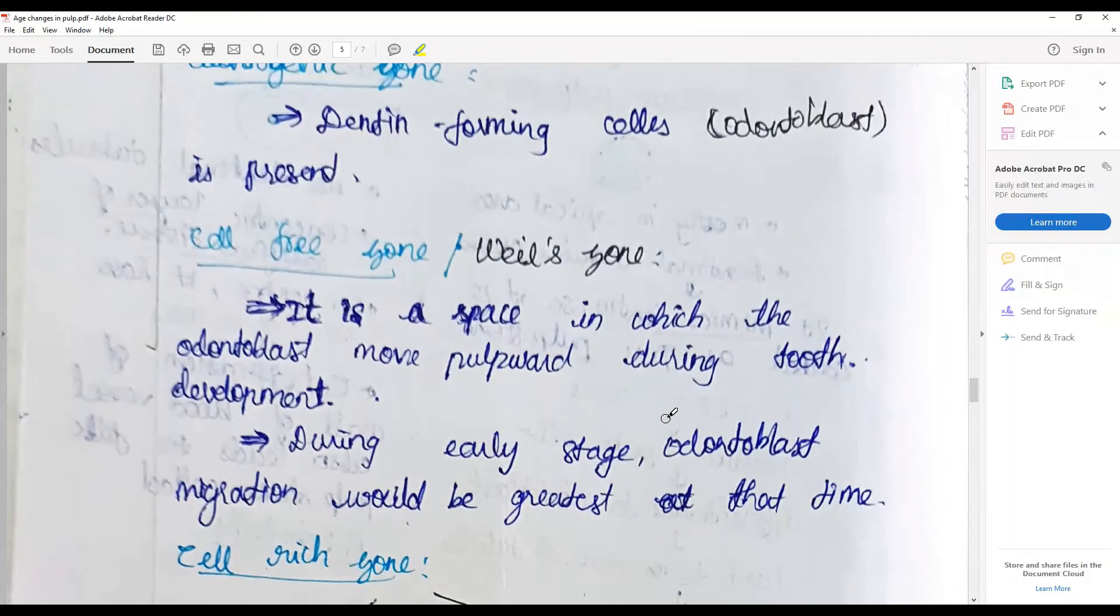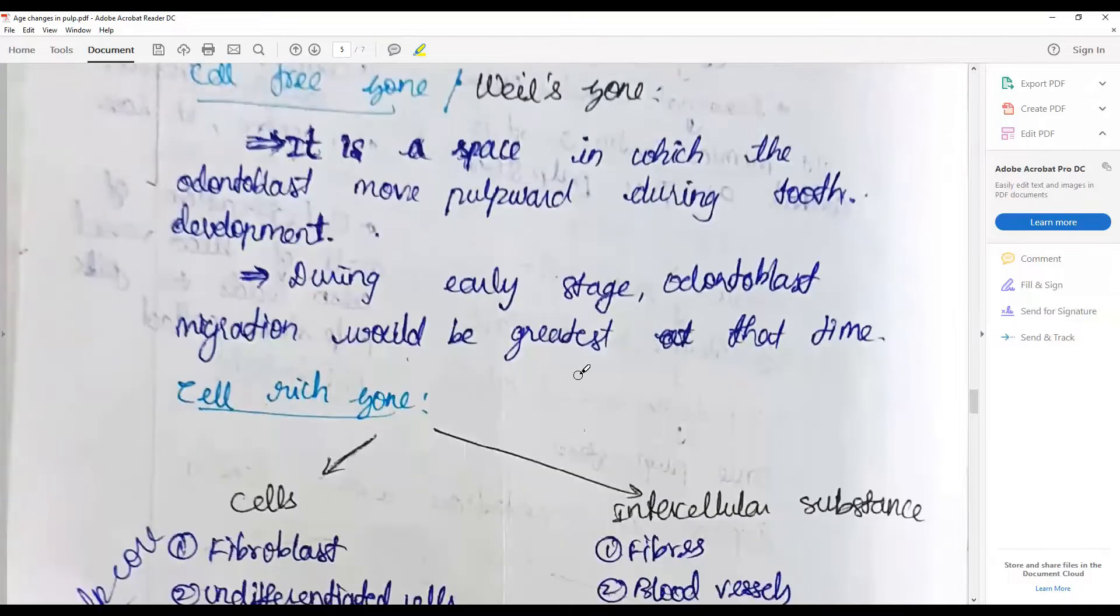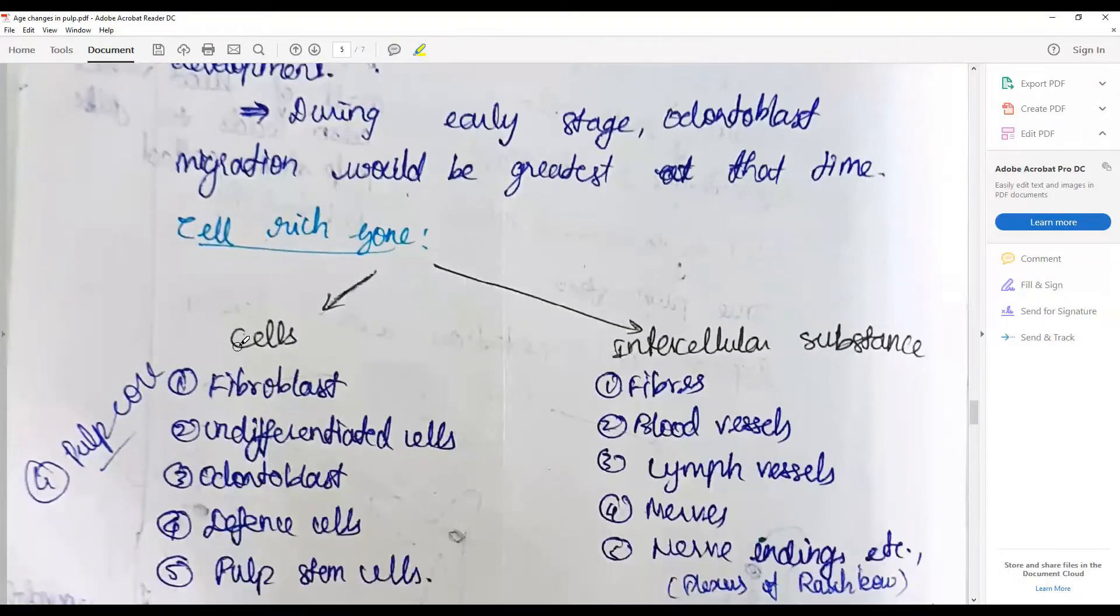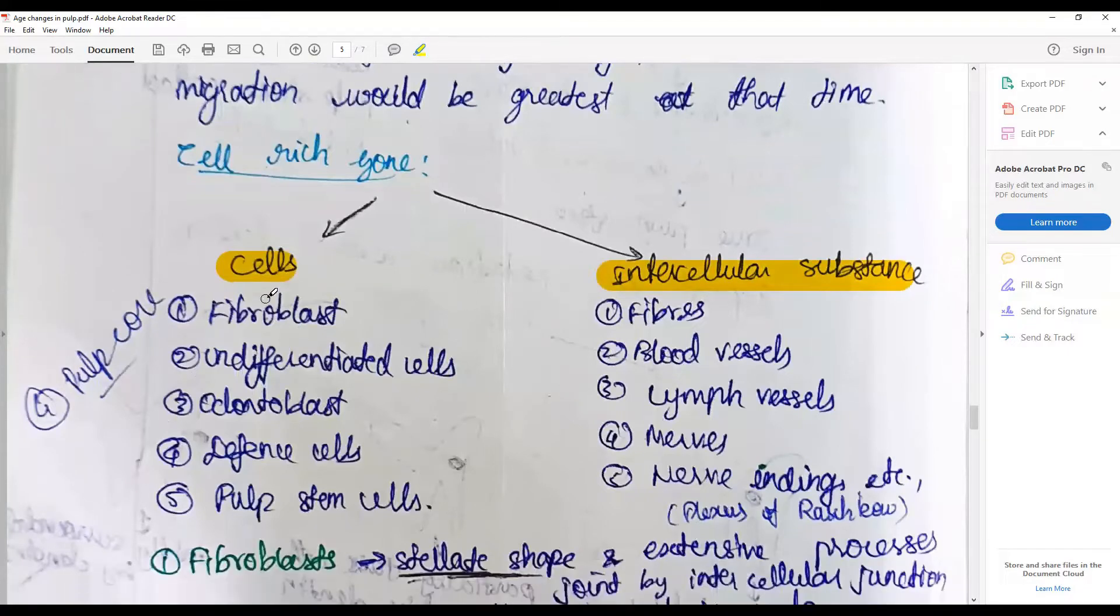This space, the Weil zone, is biggest, but as age increases this zone becomes very small. The cell-rich zone or the subsequent pulp core contains cells as well as formed elements and the intracellular substance.